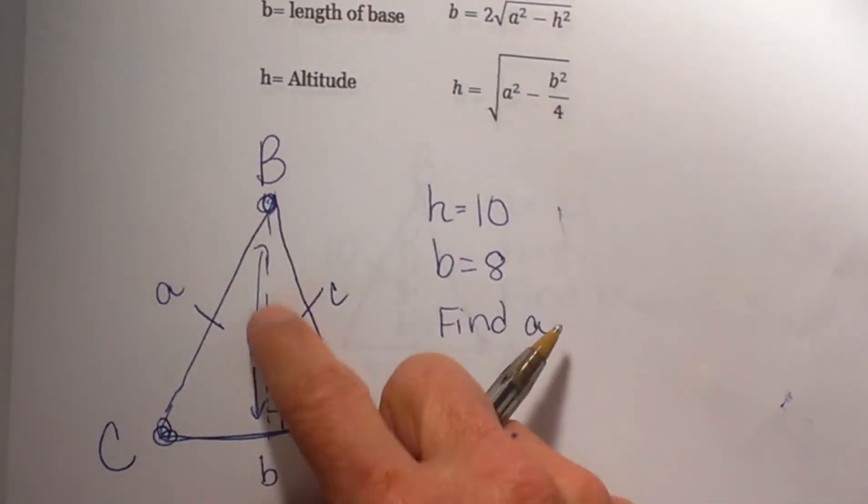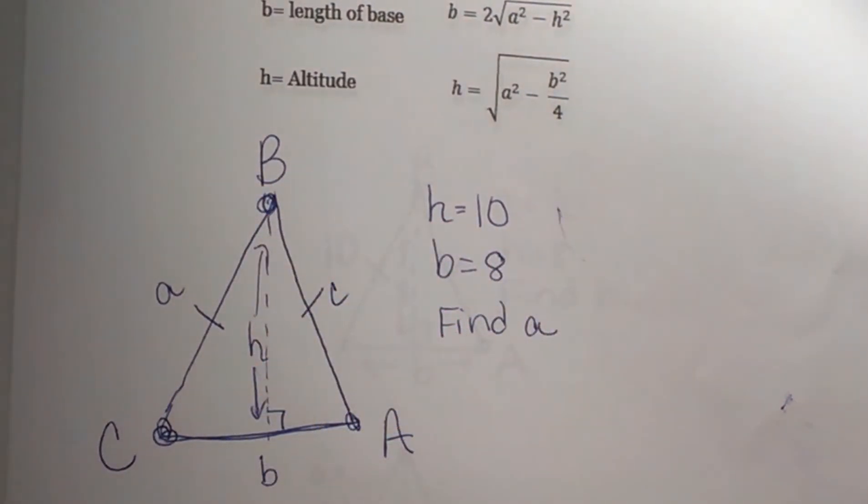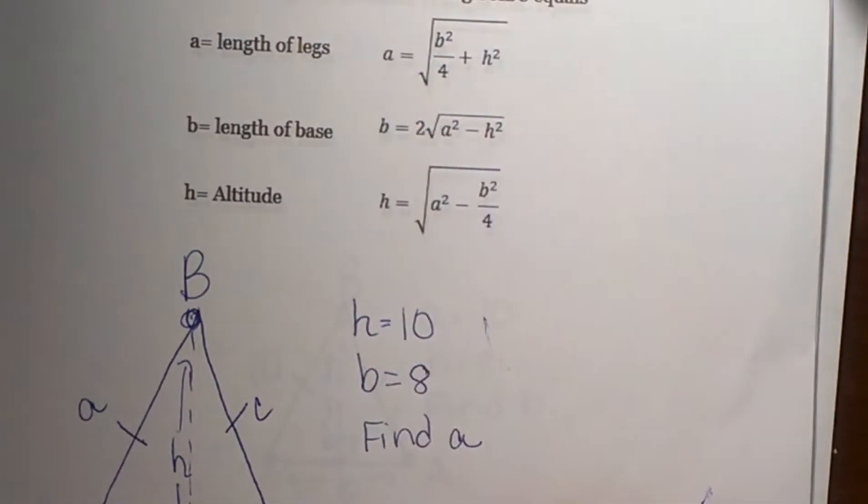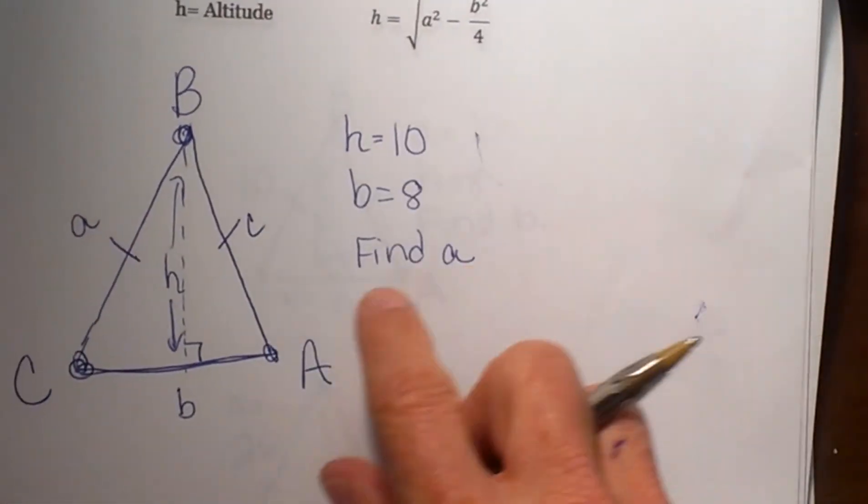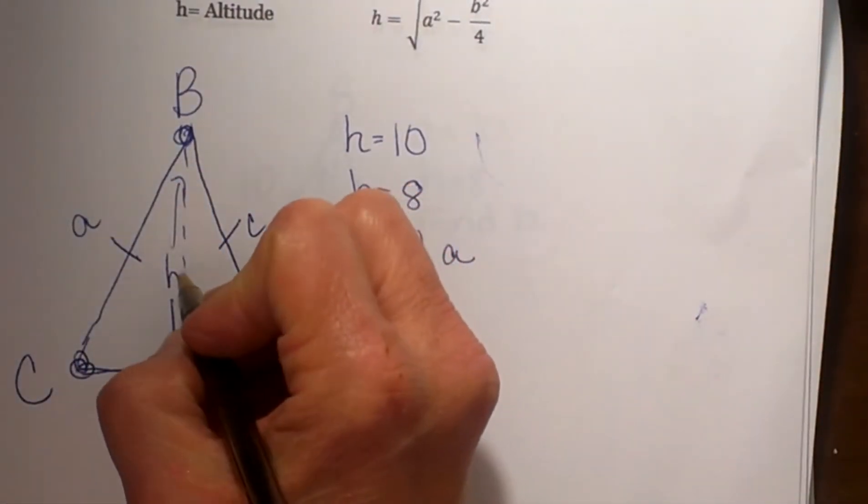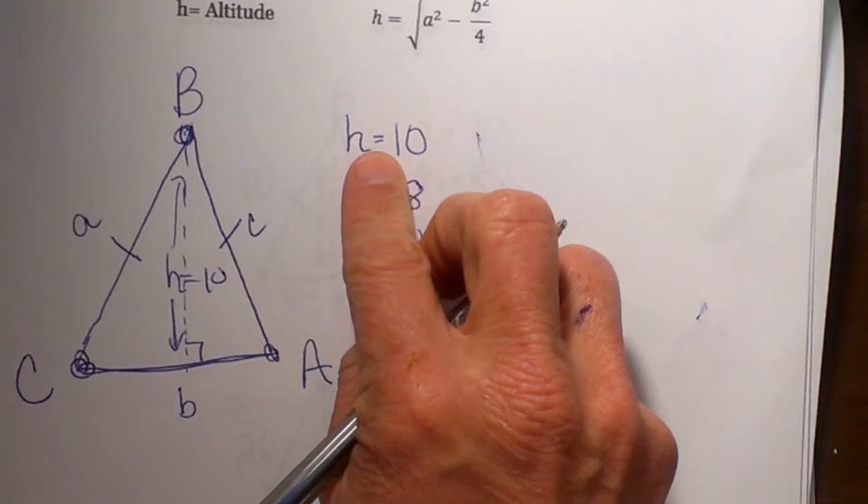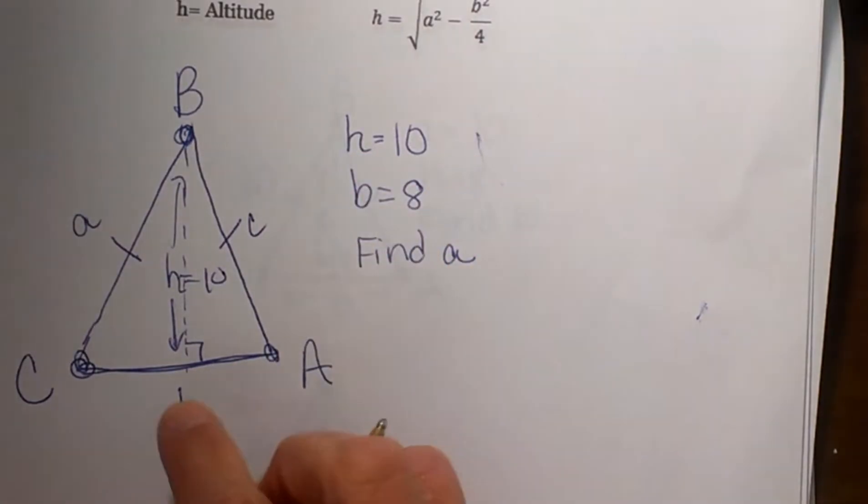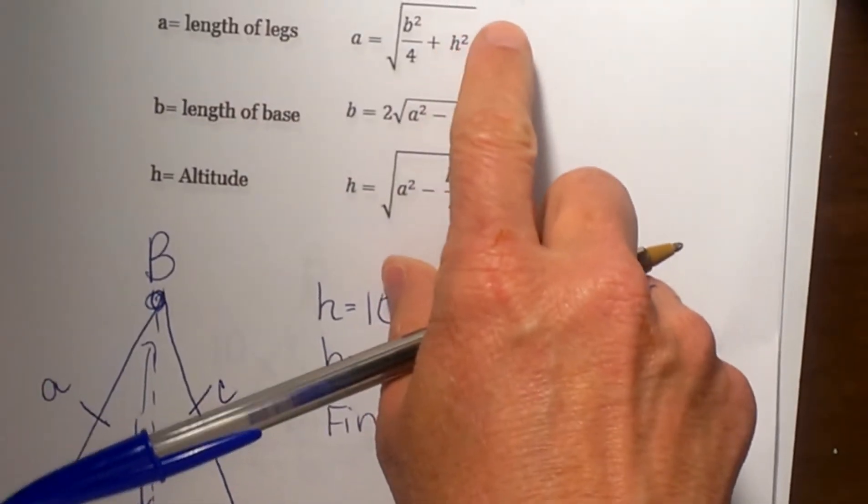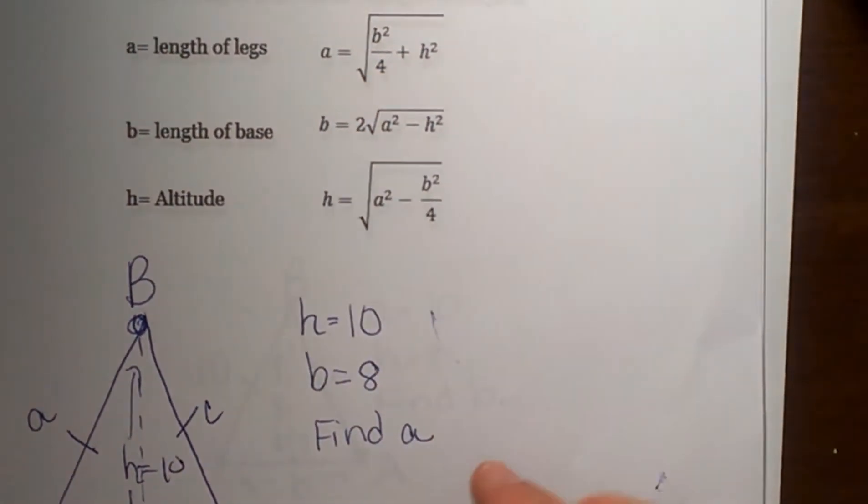The height is this internal height. So we have this triangle where our height is 10 and the base is 8. This whole length across here is 8, and we're going to plug those into this formula to find a.